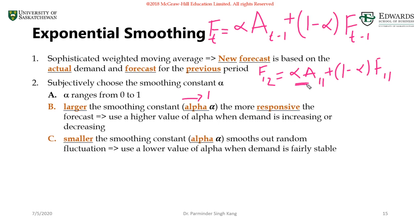A smaller smoothing constant — as we approach 0, with values like 0.1, 0.2, or 0.3 — smooths out the random variation. With a lower value of alpha, we are giving less emphasis to the most recent demand but more emphasis to the forecast, which leads to smoothing out the prediction.